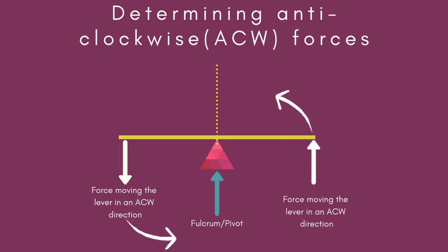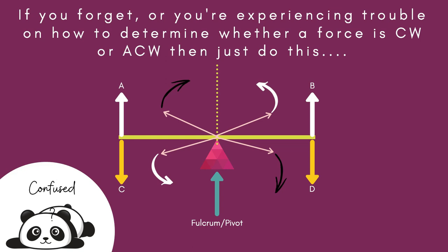Once you flip the forces, then this is a different story. The lever will turn anti-clockwise because forces to the left of the pivot would now move in an anti-clockwise direction. And forces moving in another direction on the right of the pivot will also cause the lever to move in an anti-clockwise direction. If you forget, are you experiencing trouble on how to determine whether a force is clockwise or anti-clockwise, then just do this.